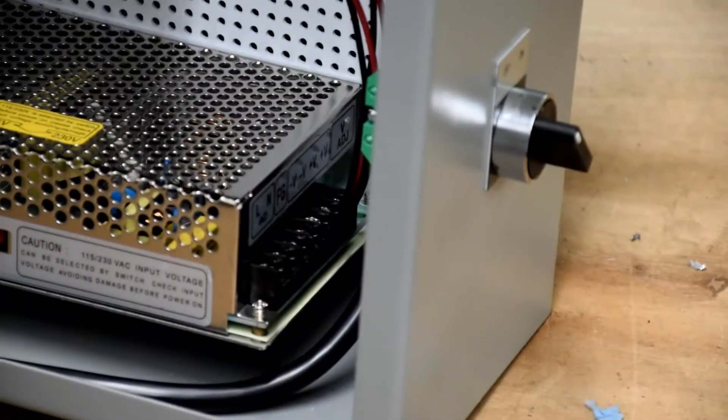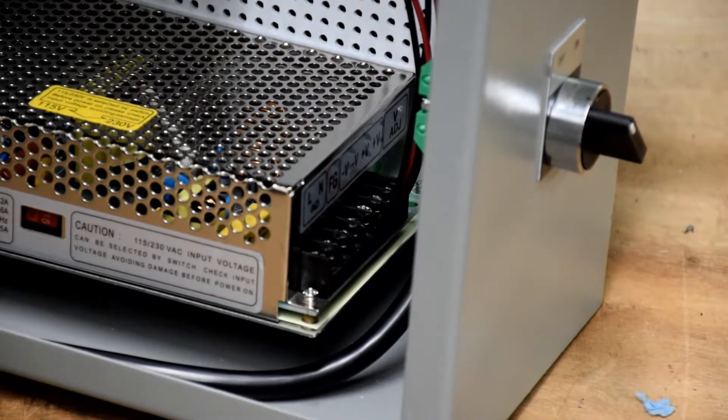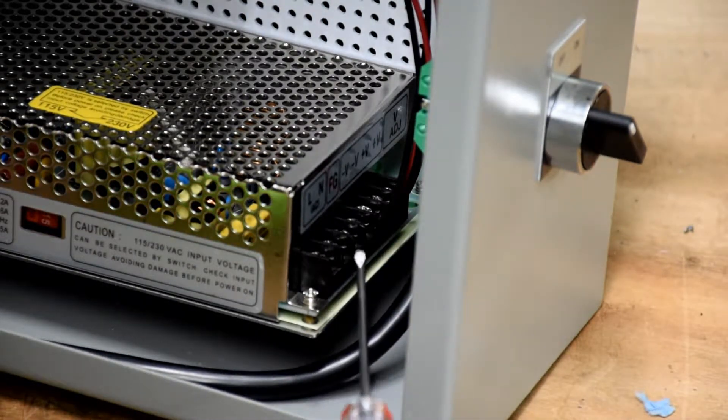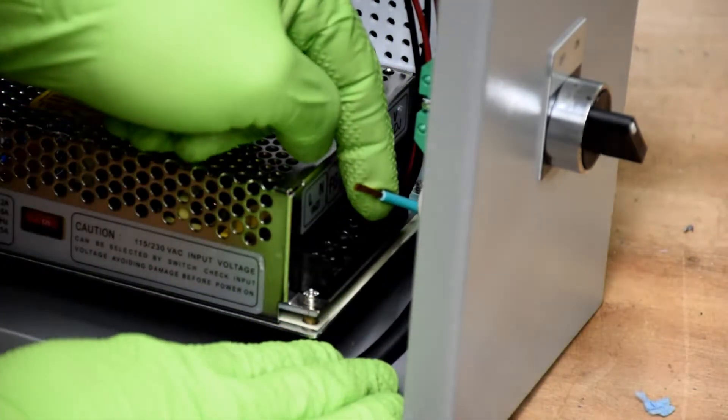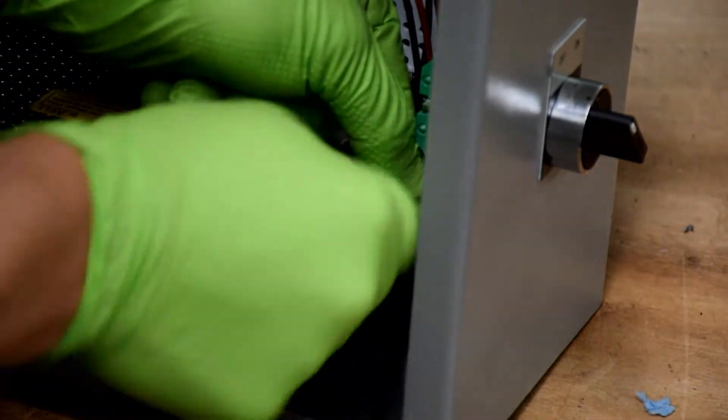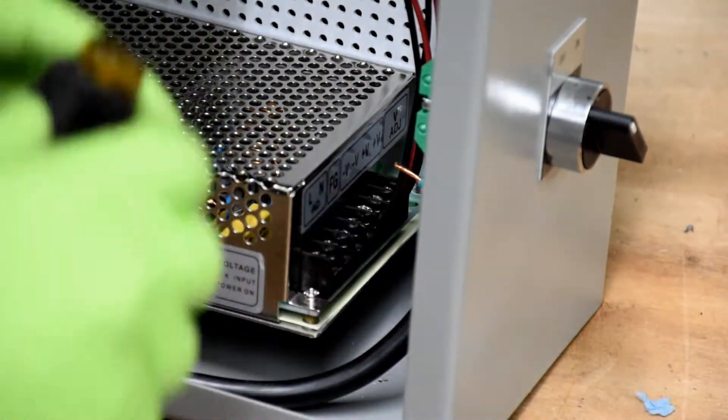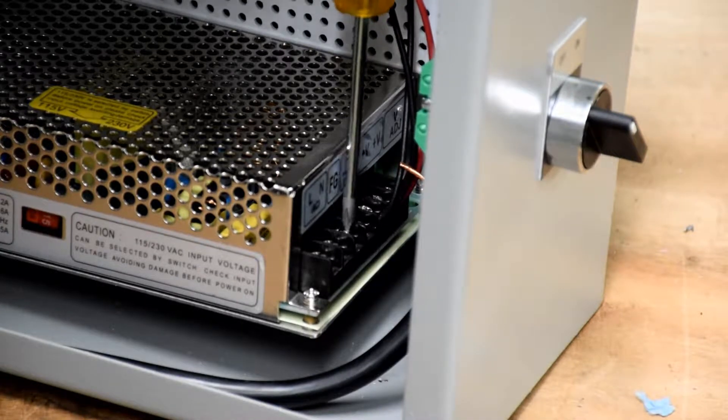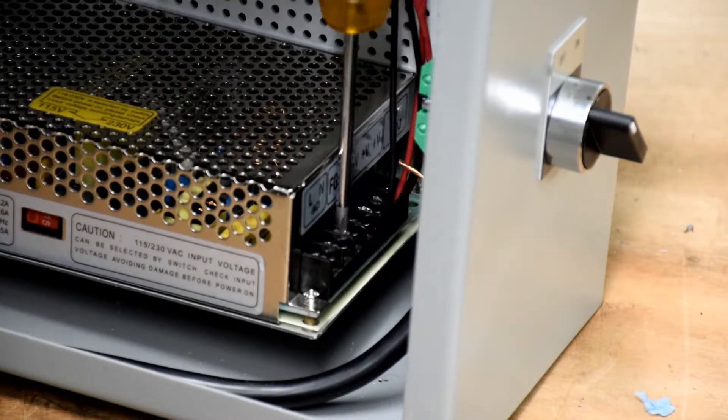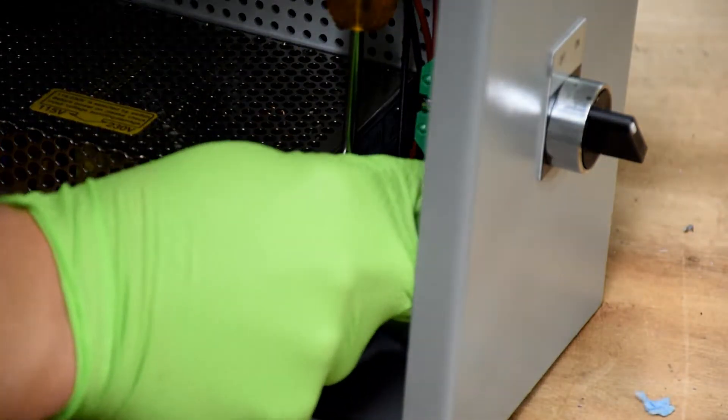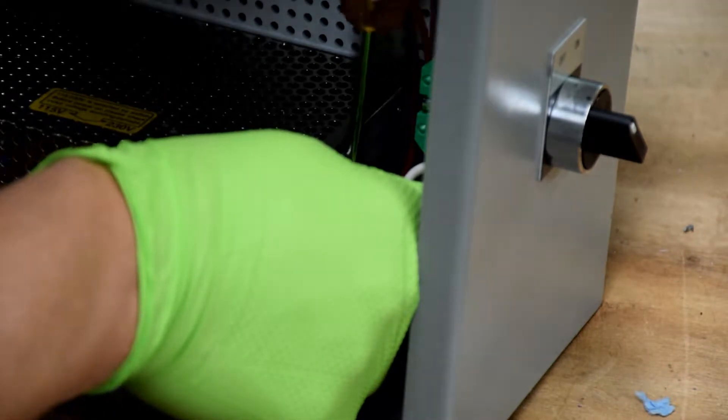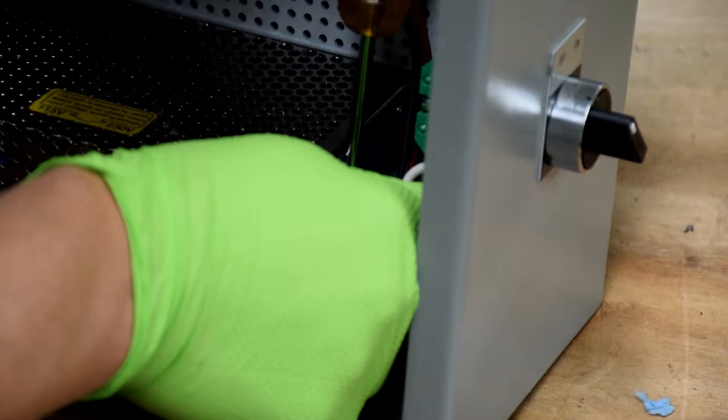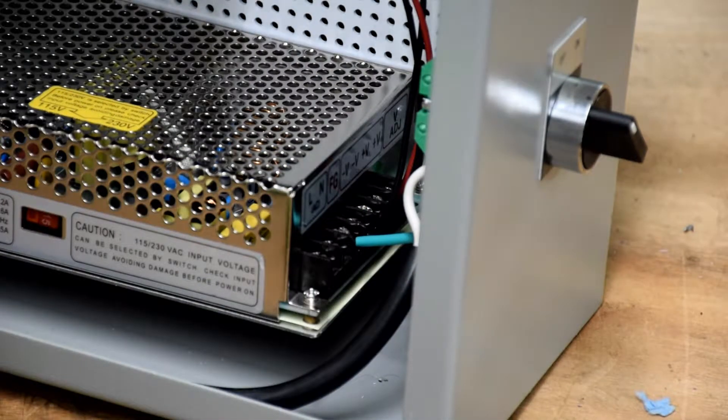And for the last part of this, we just need to attach that green ground wire to the power supply. And it goes into the terminal labeled FG. Right there, it's the third one in from the into the case. And there we go.